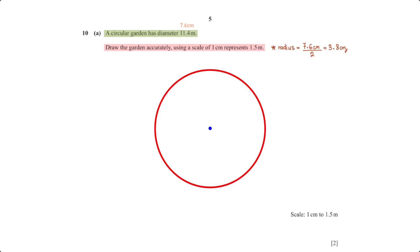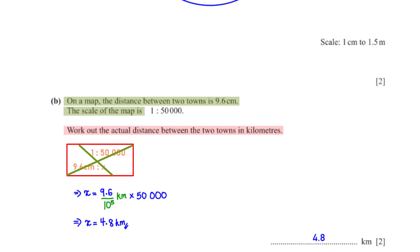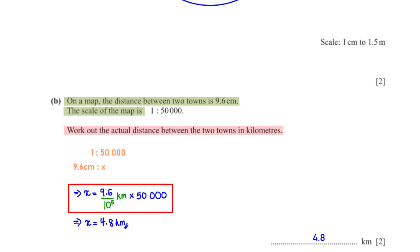On a map the distance between two towns is 9.6 centimetres. The scale of the map is 1 : 50,000. Work out the actual distance between the two towns in kilometres. Using the given scale we set up a proportion, calling the actual distance x. Cross-multiplying and converting: dividing by 10⁵ gives us 4.8 kilometres.